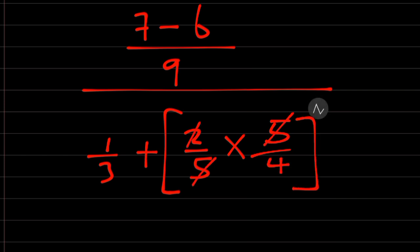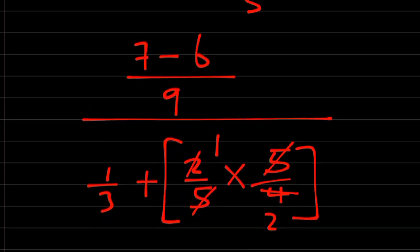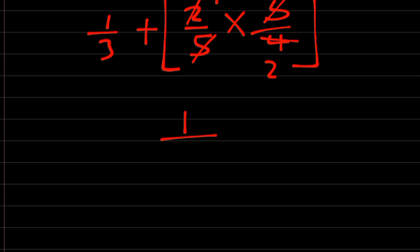Therefore, the 5s cancel. 2 divided by 4 gives us 1/2. So 7 minus 6 is 1/9. Everything over 1/3 plus 1/2.